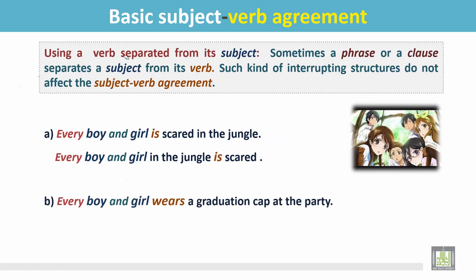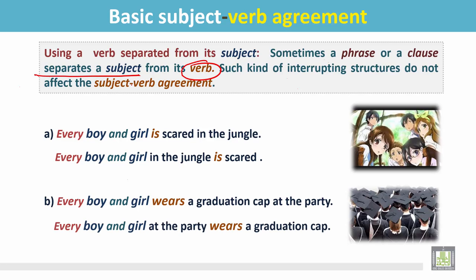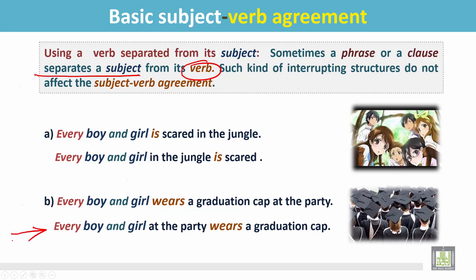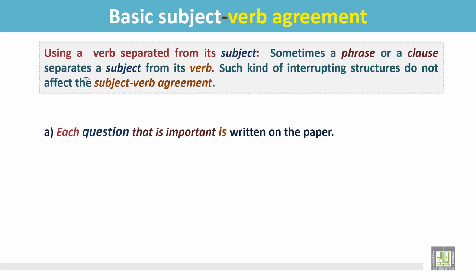See another example. In the first sentence, the subject 'boy and girl' is followed by the verb immediately. But in the second sentence, 'Every boy and girl at the party wears a graduation cap', the subject 'boy and girl' is separated from its verb 'wears'. There is a phrase after the subject, and the verb is separated from the subject.